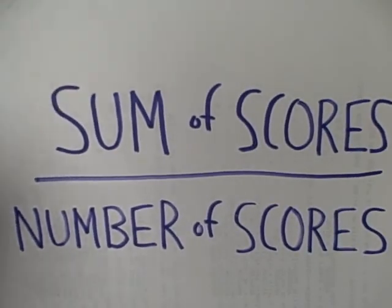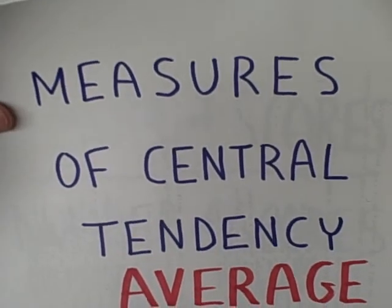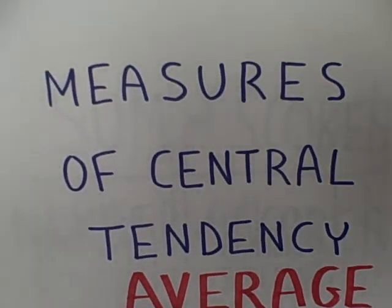That's how we calculate the arithmetic mean: the sum of the scores divided by the number of scores. A measure of central tendency.